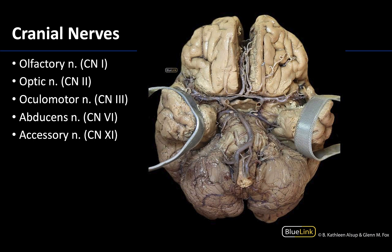Here you can see the olfactory tracts, which I'm going to outline on either side. The bulbs have been cut but they would be right in this region here. These are components of the olfactory nerve, or cranial nerve 1, and they're located on the inferior portions of the frontal lobes, lateral to the anterior extensions of the anterior cerebral artery — kind of on either side of that longitudinal fissure.